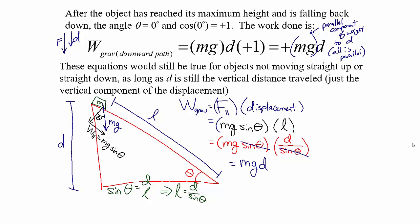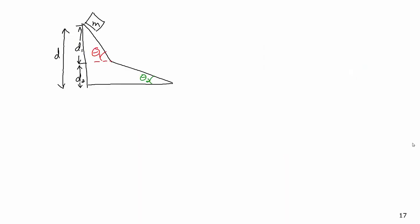And if something was sliding up the ramp, it would be just like the case before — it would be negative mg times the vertical distance. It turns out that this can even be applied in situations where the ramp changes angles in the middle, assuming the object is able to continuously slide along.